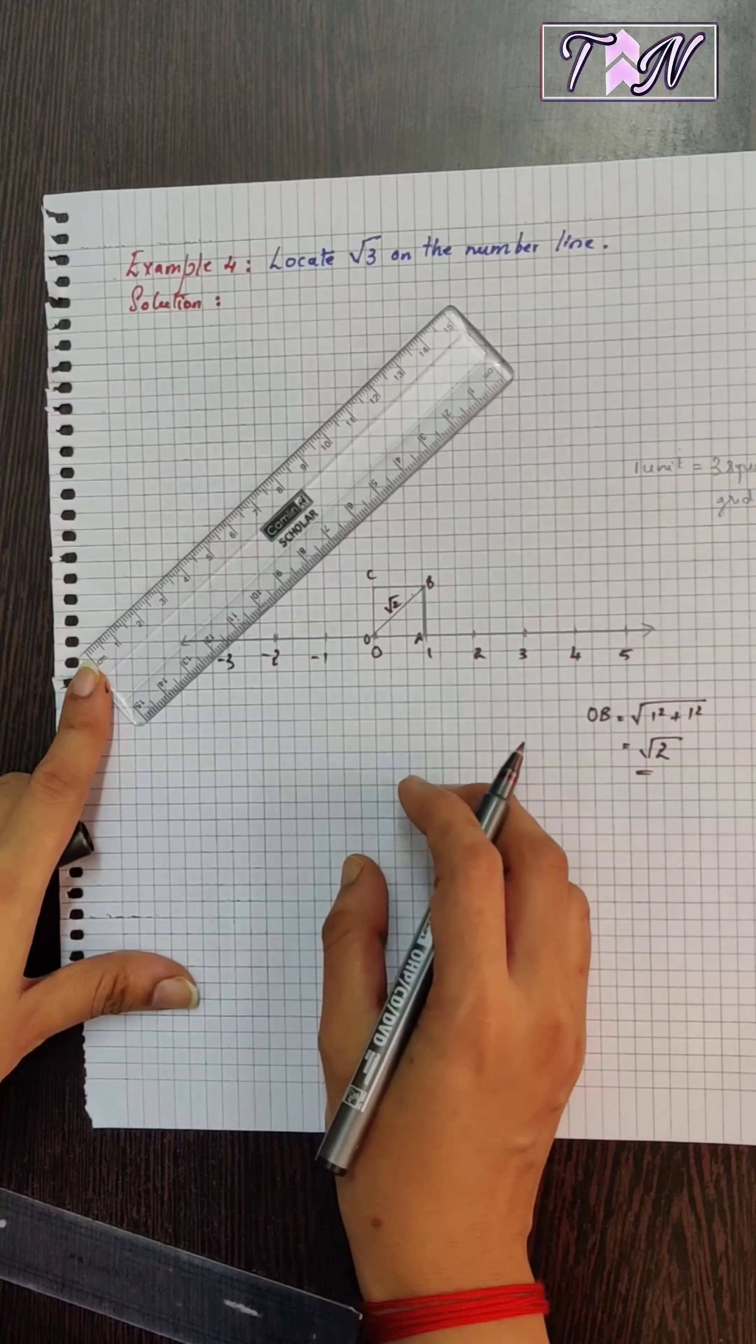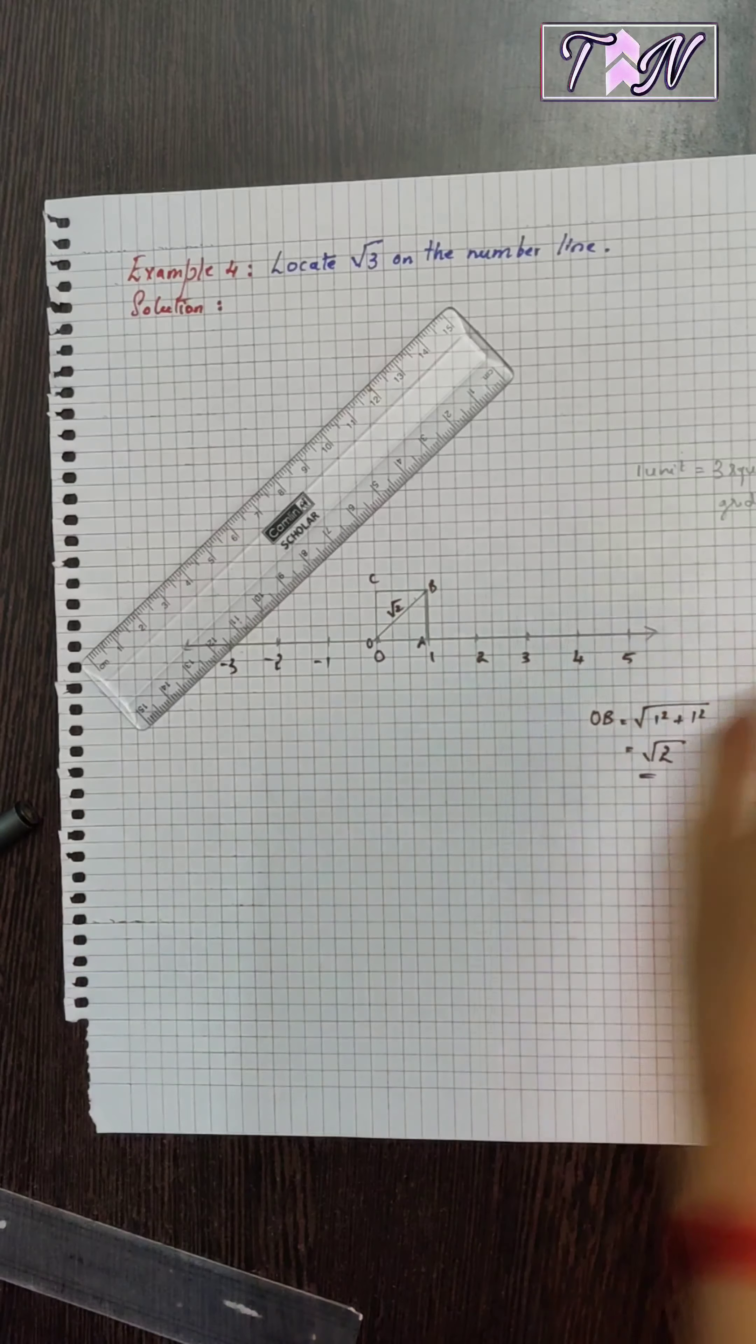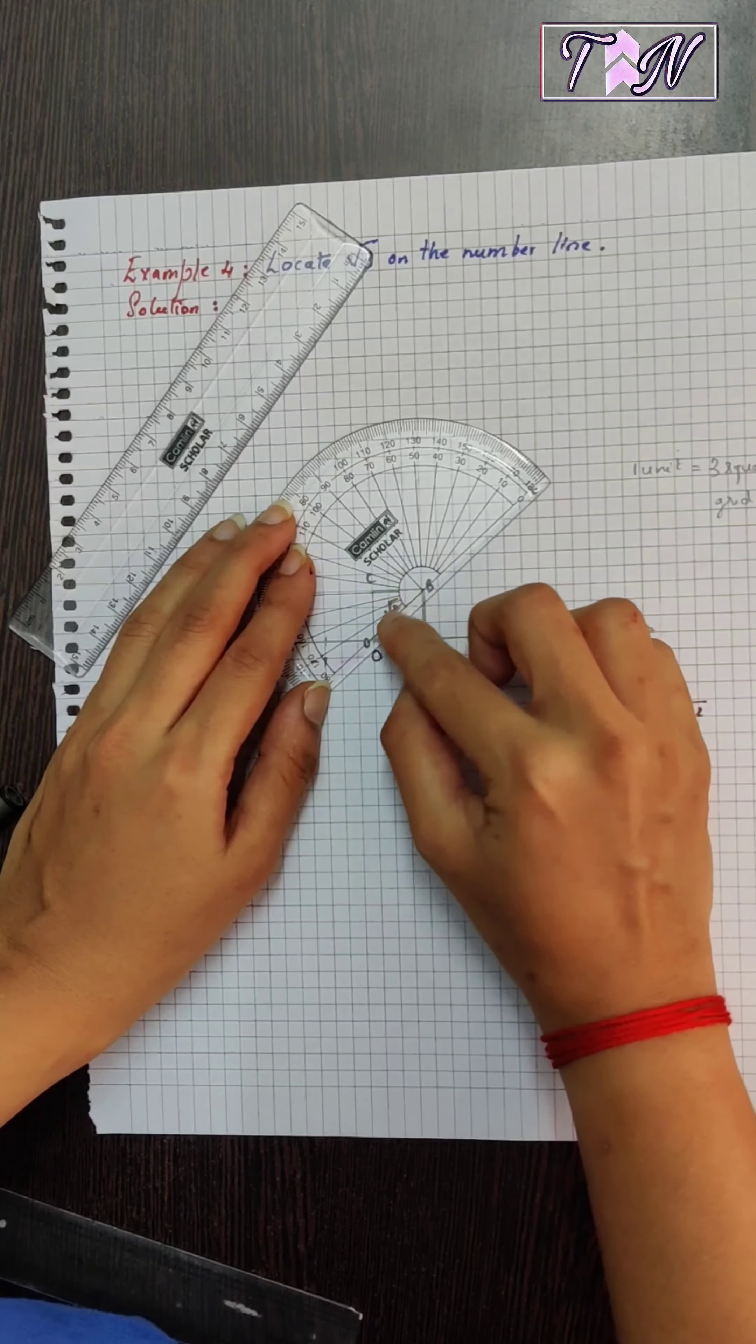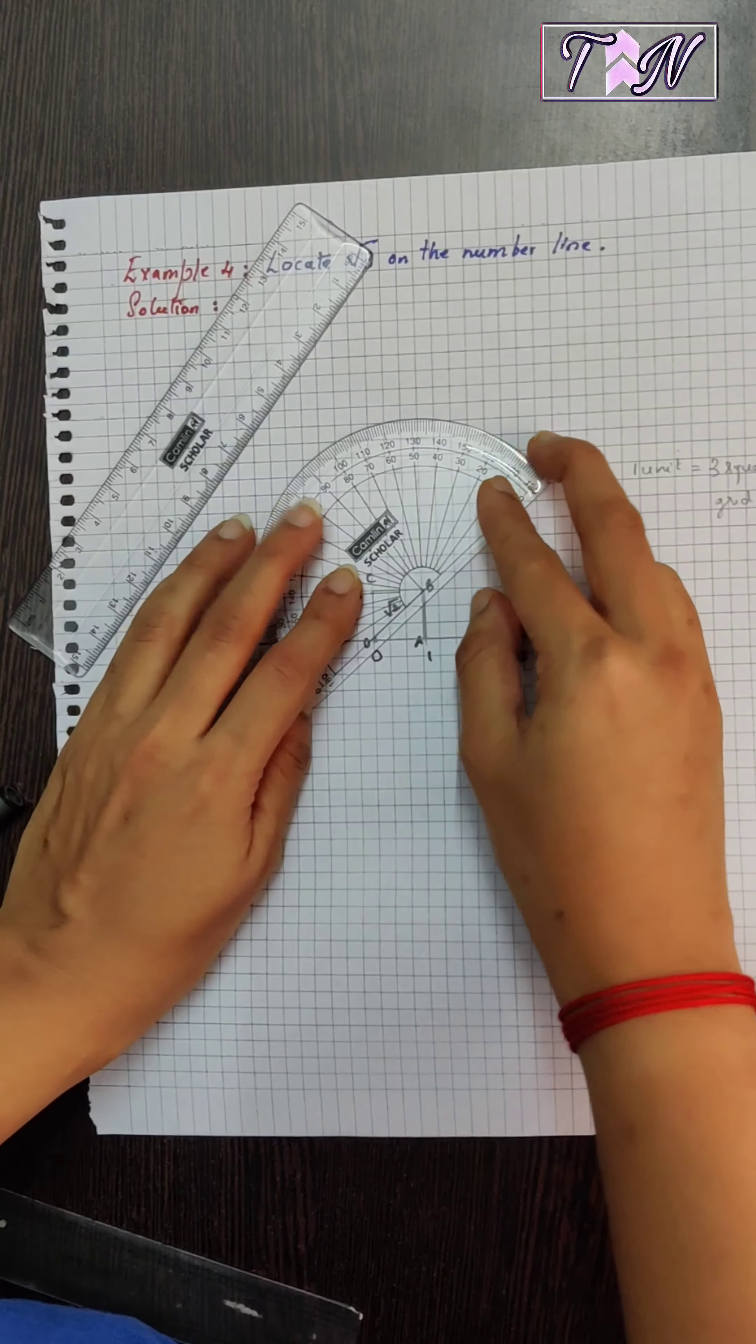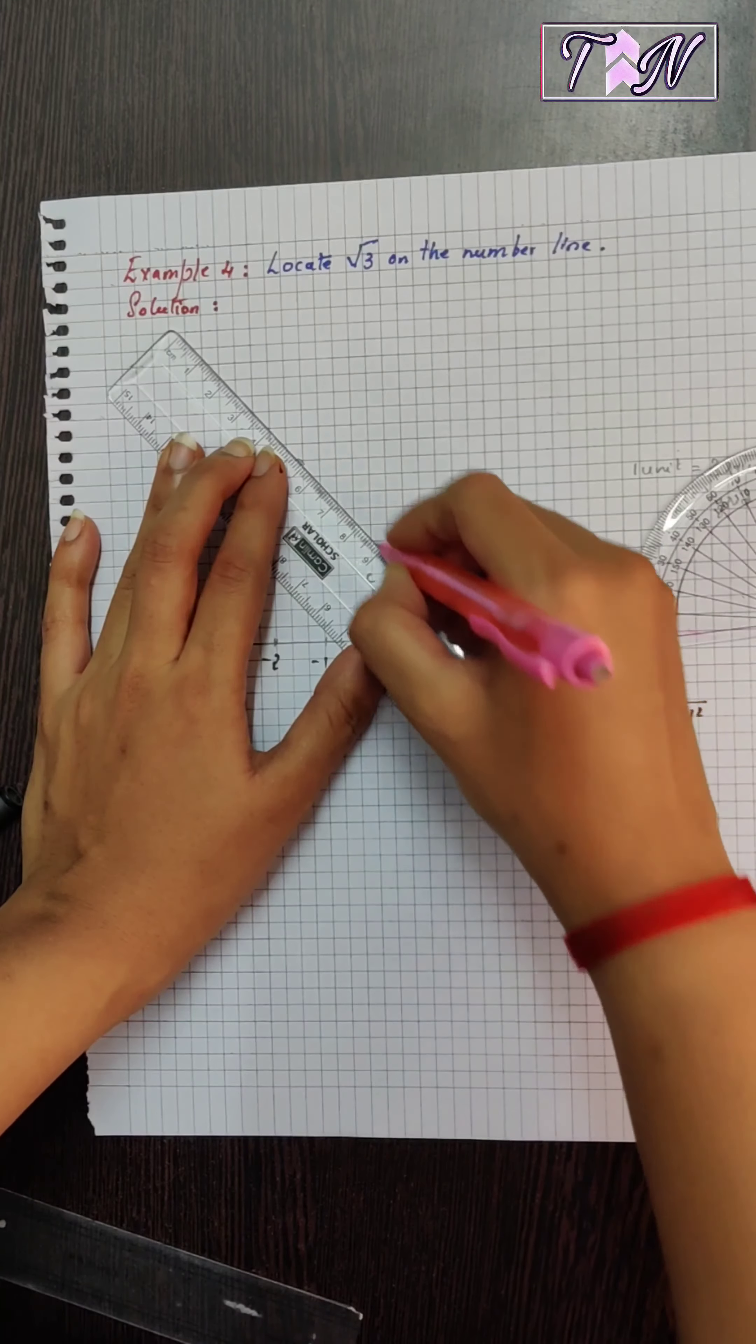Now, in order to draw root 3, what I will do is, from the point B, draw a perpendicular that is 90 degrees. I will take the protractor, place it at B such that the horizontal and vertical line coincides with B here and it aligns with the line OB. So, mark the 90 degree here. Let me join these points.